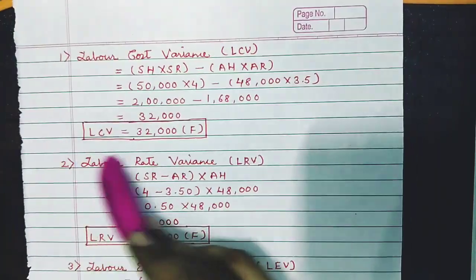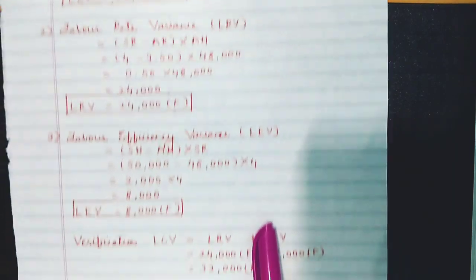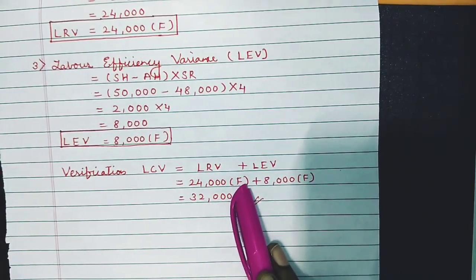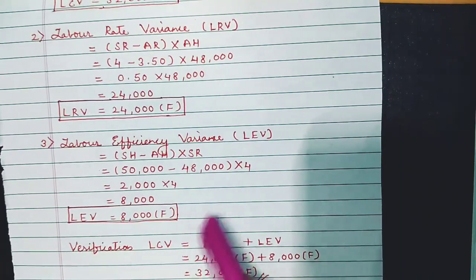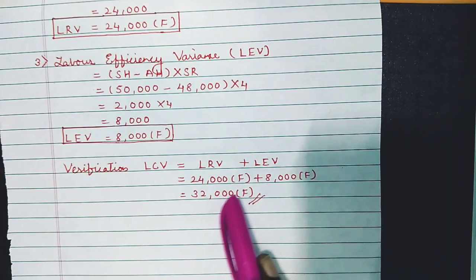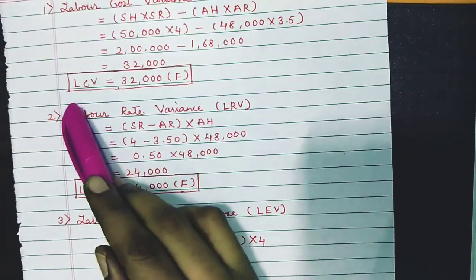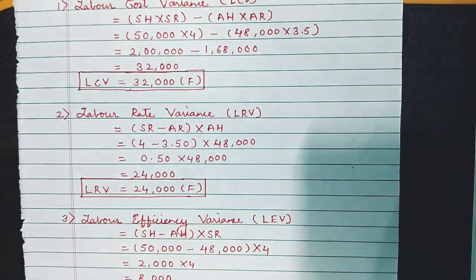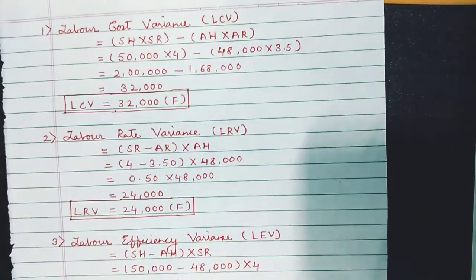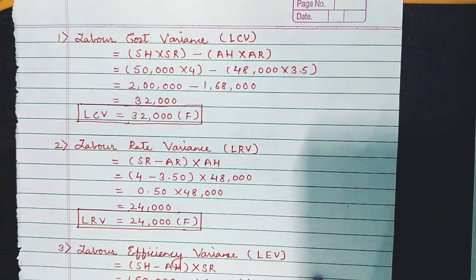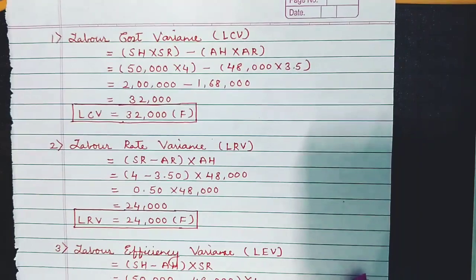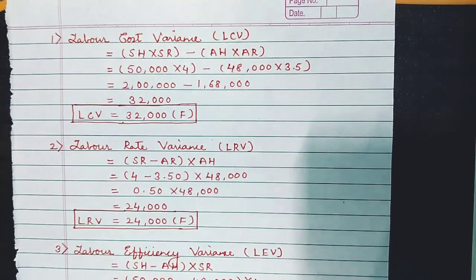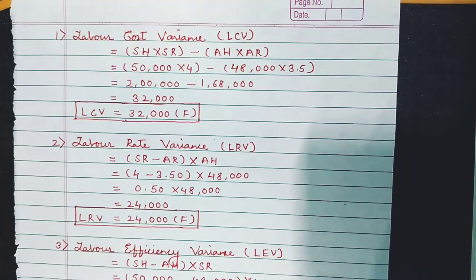Verification: LCV should equal LRV + LEV. LRV is 24,000 Favorable and LEV is 8,000 Favorable, so 24,000 + 8,000 = 32,000 Favorable. This matches LCV = 32,000 Favorable — verified. I hope the concept of standard costing is clear. All the best for your examination — score 15 out of 15 in standard costing. Keep watching my further lectures. Thank you!